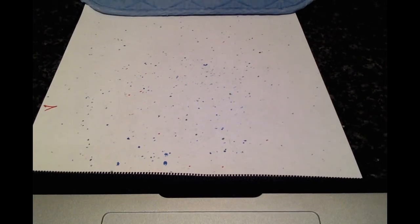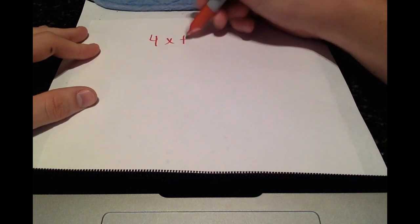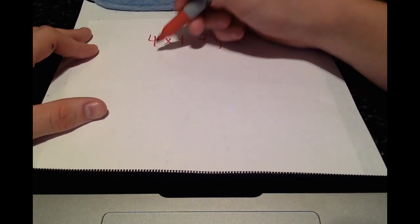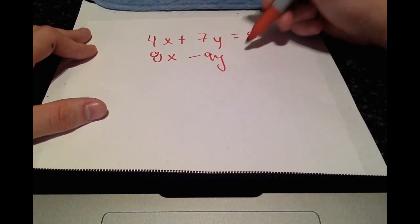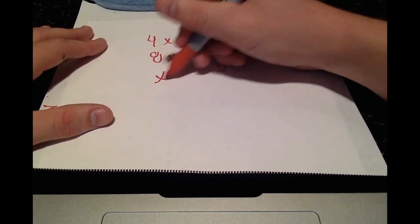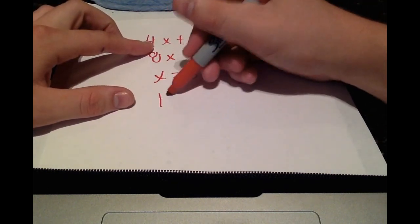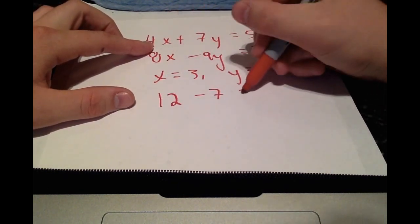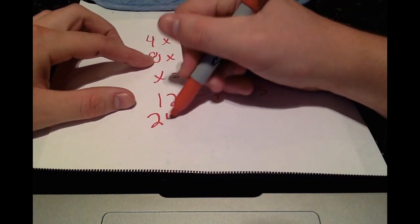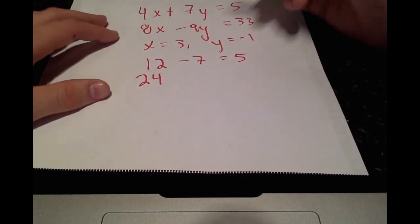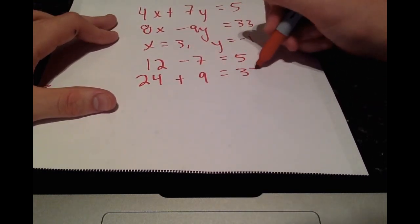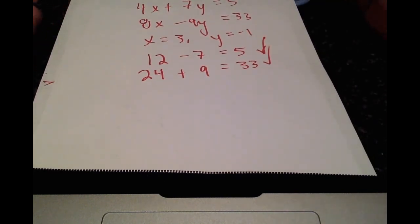So the last and final step, look at your original equation and verify that. 4X plus 7Y equals 5 and 8X minus 9Y is equal to 33 with the values X equals 3 and Y equals negative 1. What do we get? So we have 12 minus 7 equals 5 and then we have 24 plus 9 is equal to 33 and if you ask me both of these look correct. So we are done. We have successfully done LU decomposition.